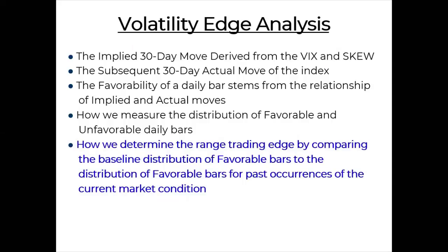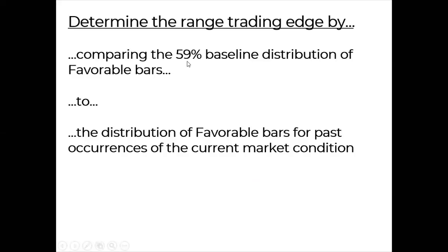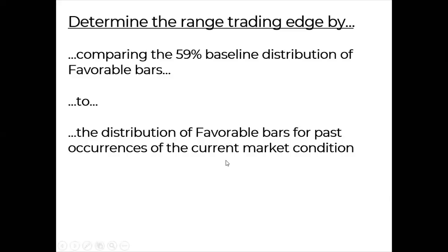Now we have to measure the distribution of favorable and unfavorable daily bars and get a baseline. I go back to January of 2000 and look at the percentage of bars that were favorable and the percentage that were unfavorable. When you go back that far, you've got somewhere around 4,700 bars, and roughly 59% of the bars turned out to have been favorable, and unfavorable is 41%. So if you flip a coin, you have a 59% chance of landing on a favorable bar. But we want to try and beat that and put these on when we have a greater likelihood of it turning out favorable — that's our goal. We're going to determine our range trading edge by comparing the baseline distribution of favorable bars at 59% to the distribution of favorable bars for past occurrences of our current market condition.